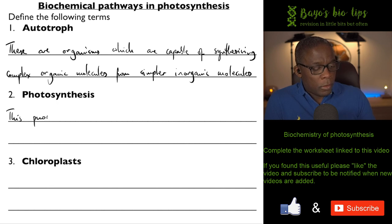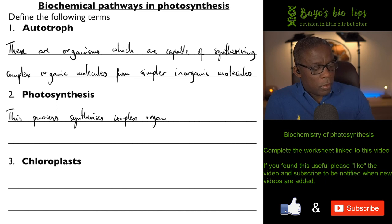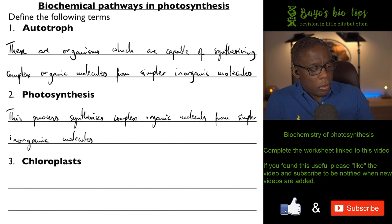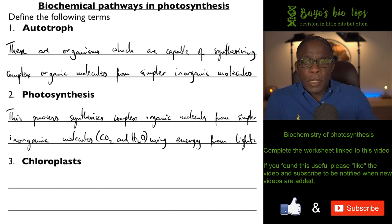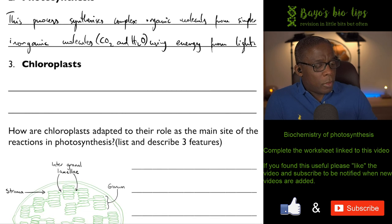Photosynthesis synthesizes complex organic molecules from simpler inorganic molecules - basically carbon dioxide and water - using energy from light. So that's a specific form of an autotrophic process.